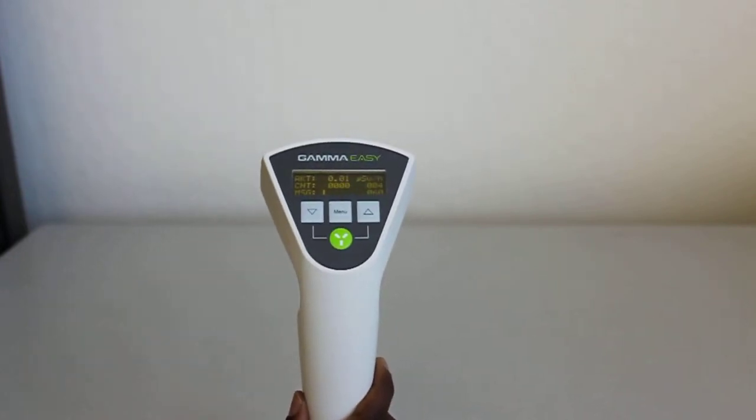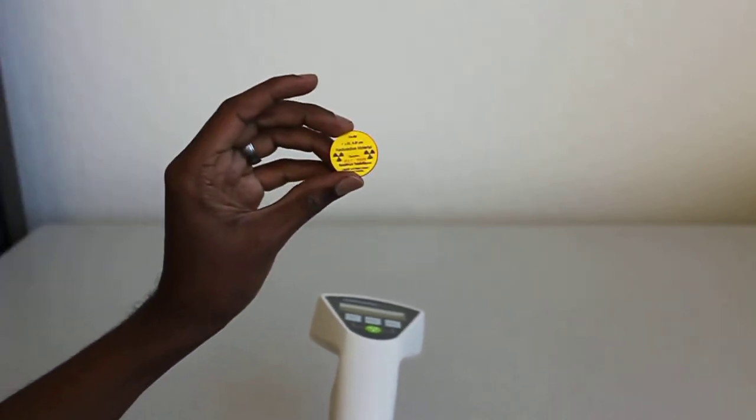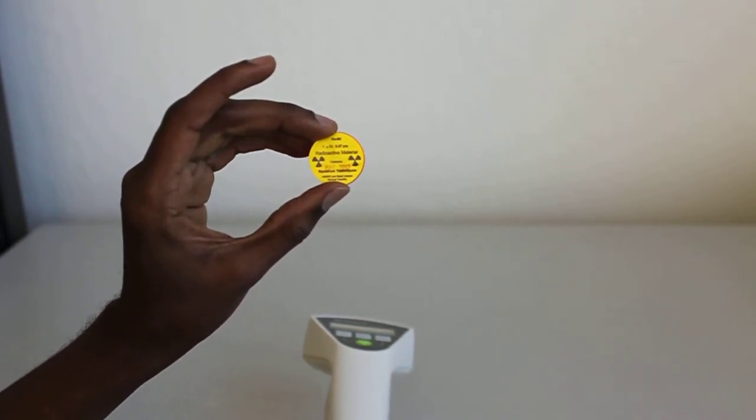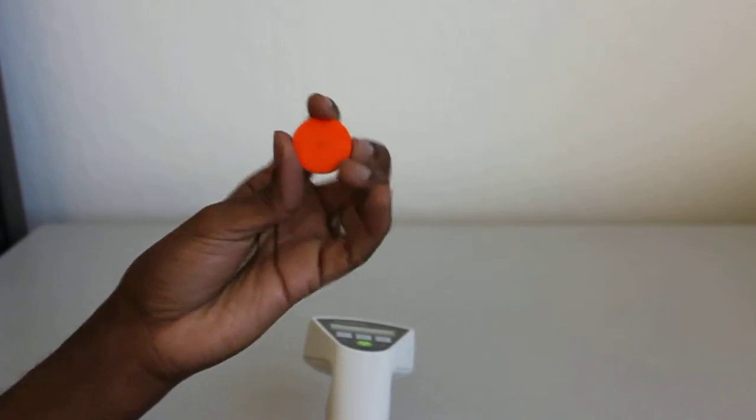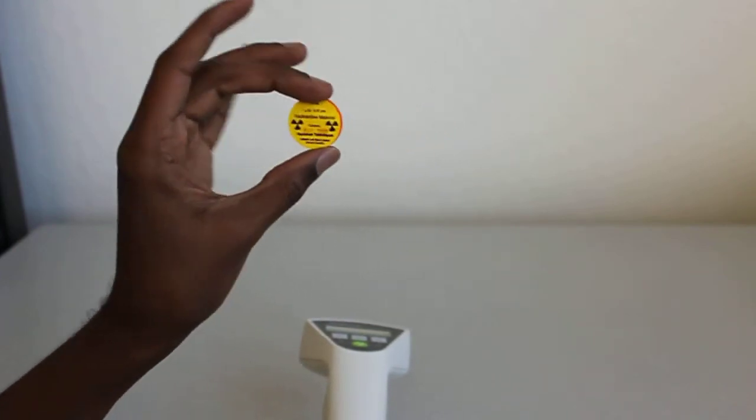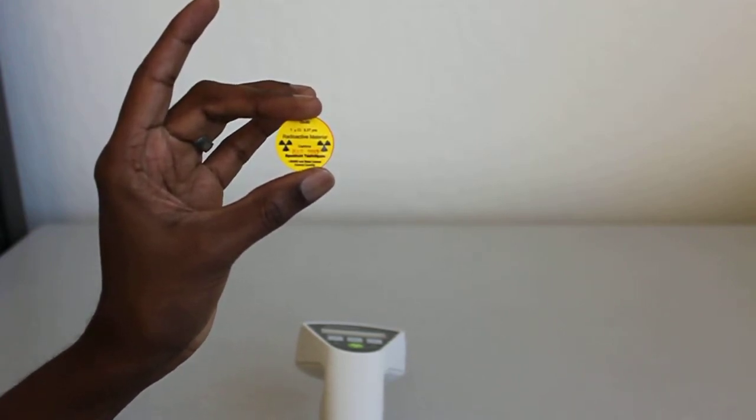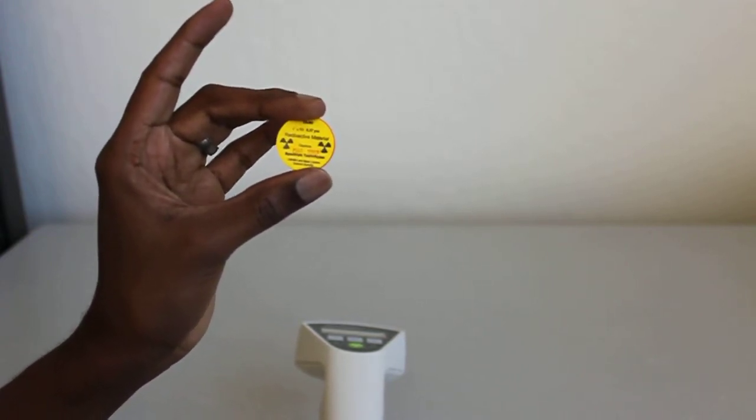Let me show you the samples I have. I have a Cobalt-60 source, which is a gamma radioactive source, and it's just one microcurie, little dot in the middle there of Cobalt-60, and it's used a lot in medical devices, like to generate x-rays, that kind of stuff.